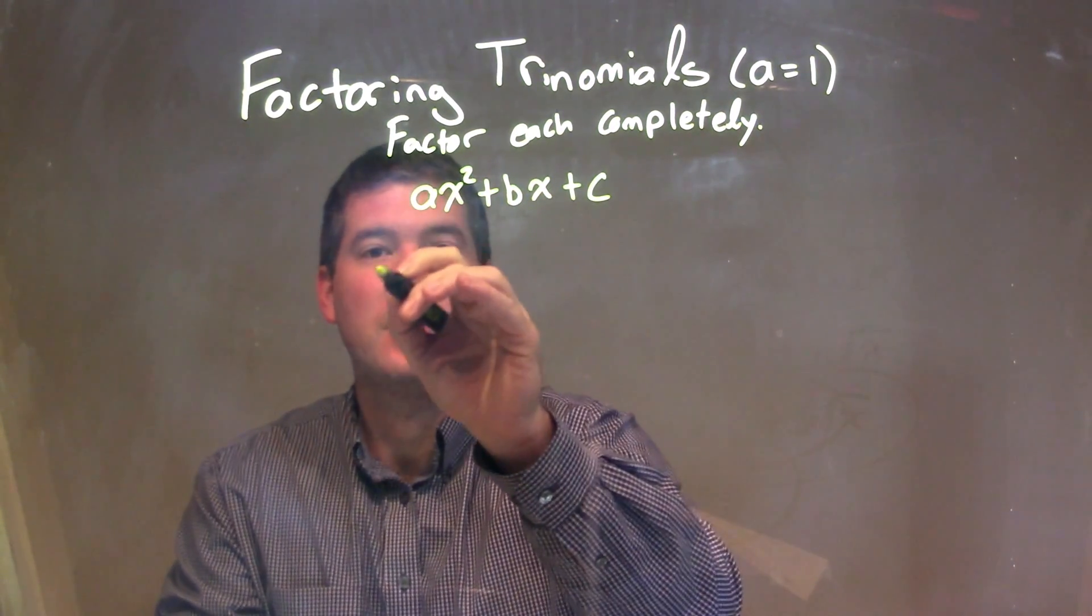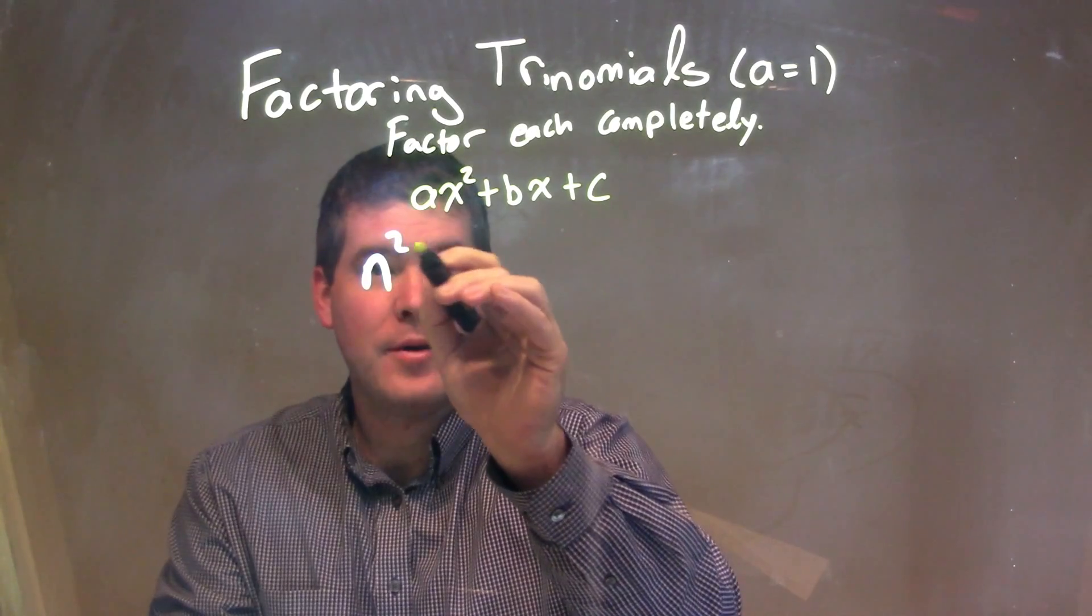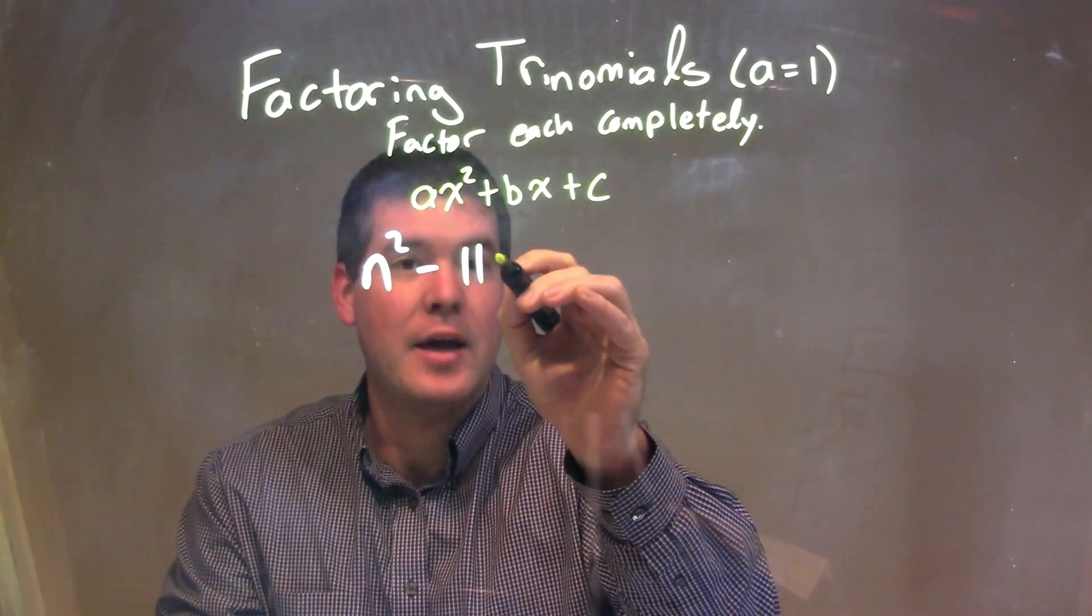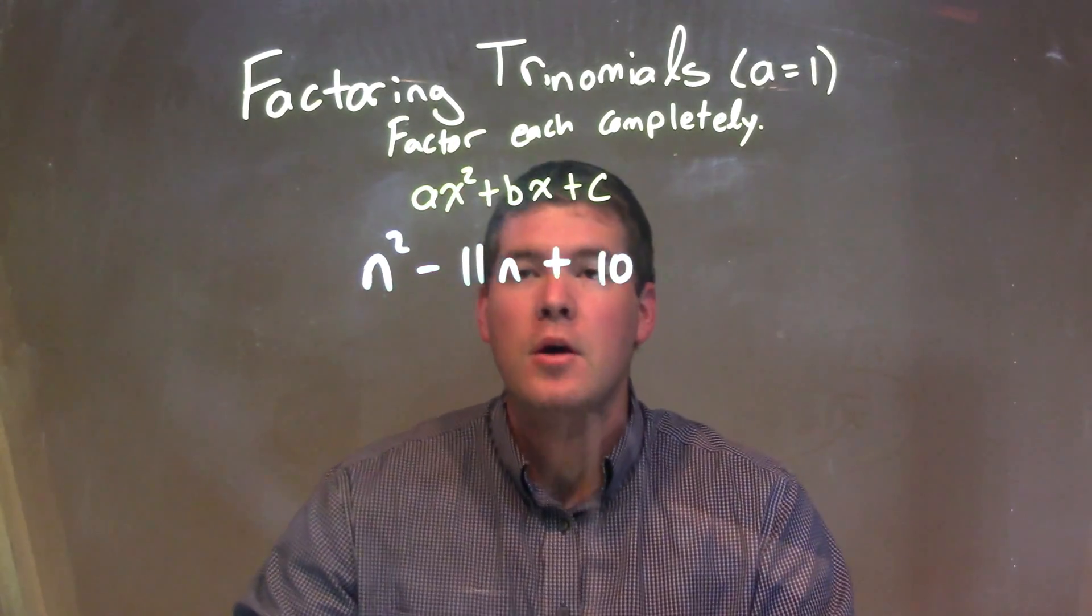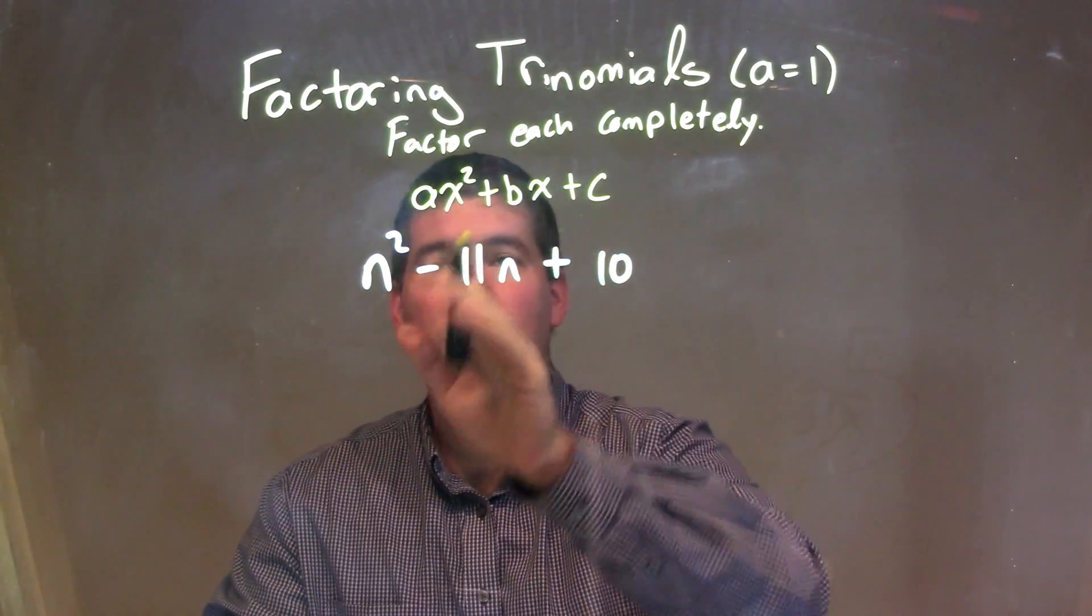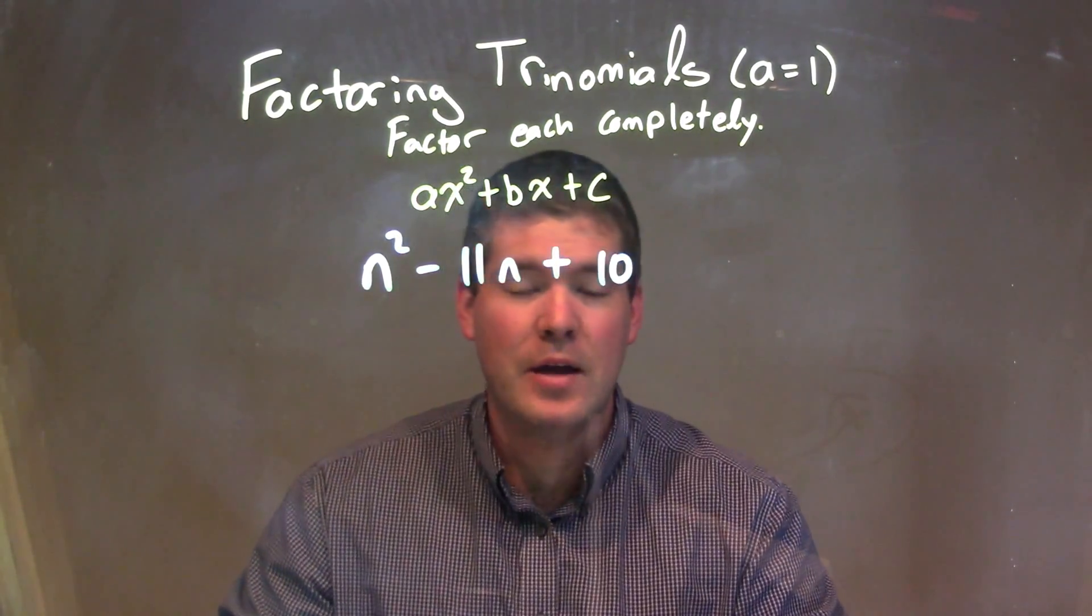So if I was given this trinomial: n squared minus 11n plus 10. Now, we have an a value of 1, right, the coefficient in front of the n squared.